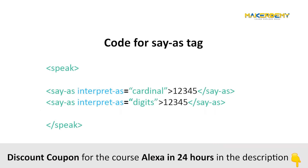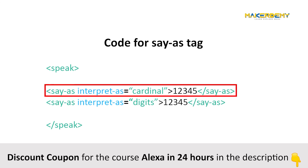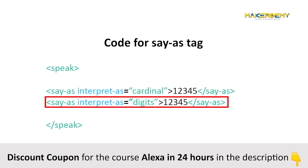This is a sample code for implementing the say-as tag. One line interprets one, two, three, four, five as a number — meaning Alexa will read it as 12,345. Whereas another line will be interpreted as digits — Alexa will read it as one, two, three, four, five.